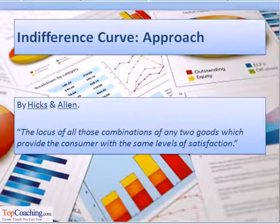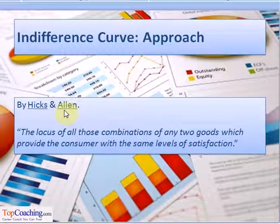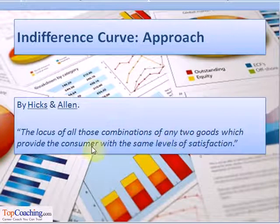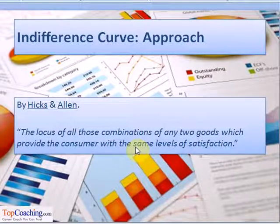Our next subtopic is the indifference curve. This approach was proposed by Hicks and Allen. An indifference curve can be defined as the locus of all those combinations of any two goods which provide the consumer with the same level of satisfaction; thus, the consumer is indifferent about these combinations.